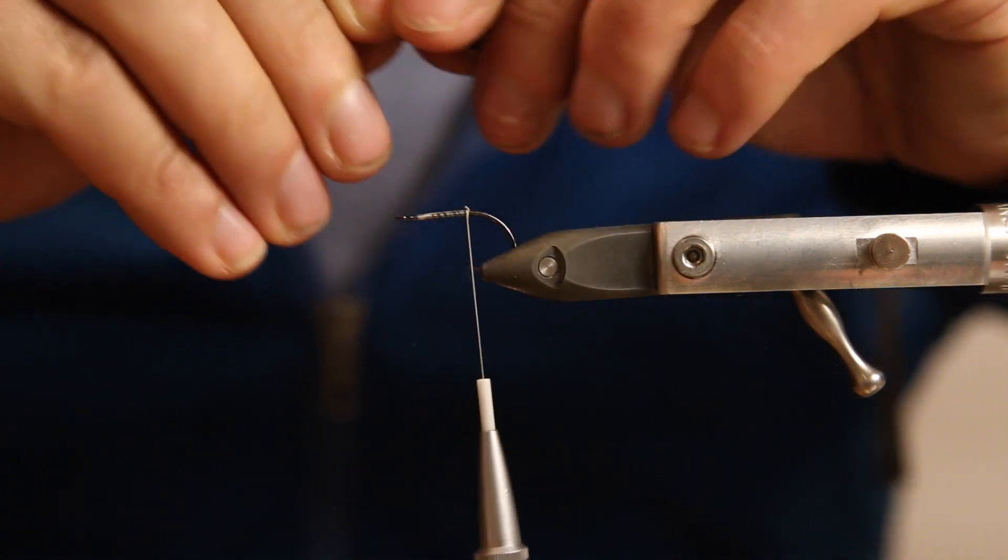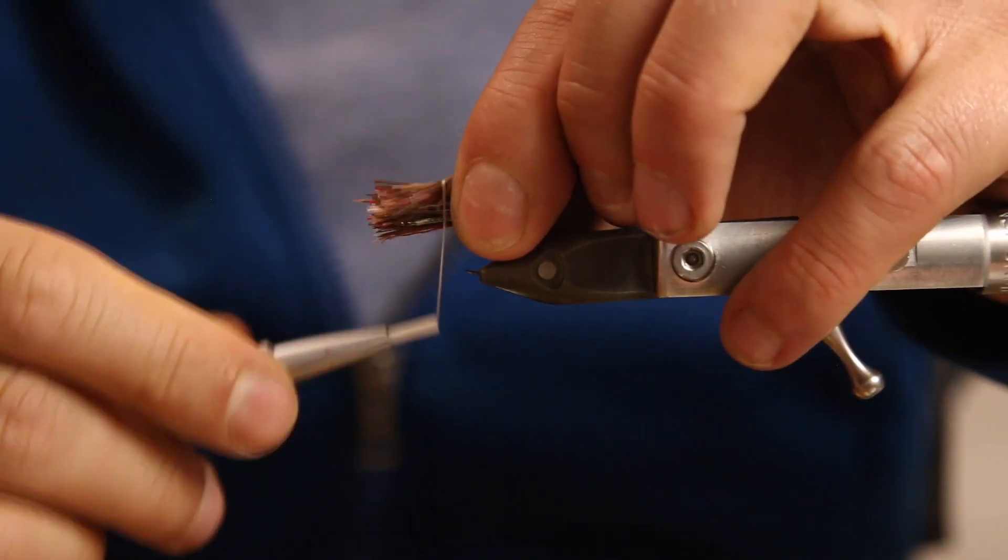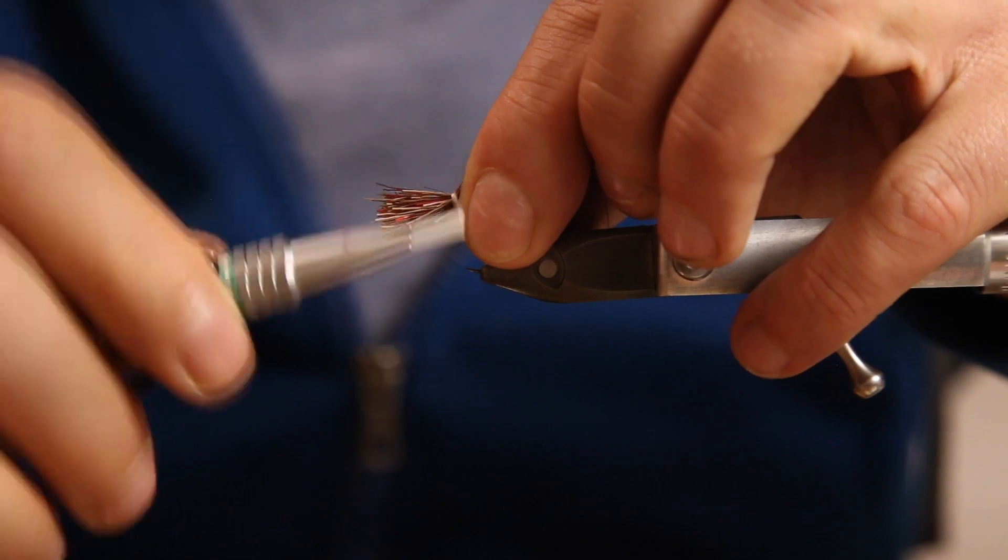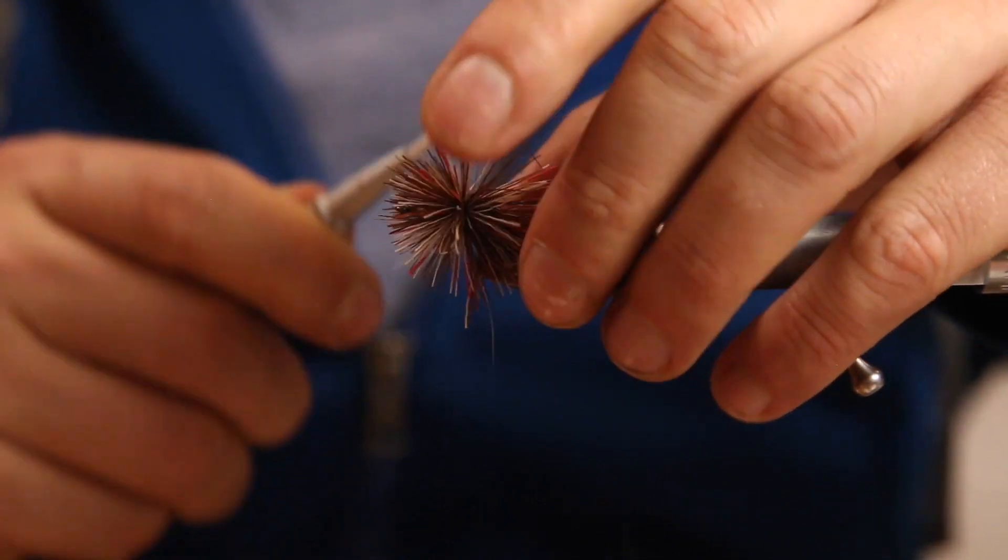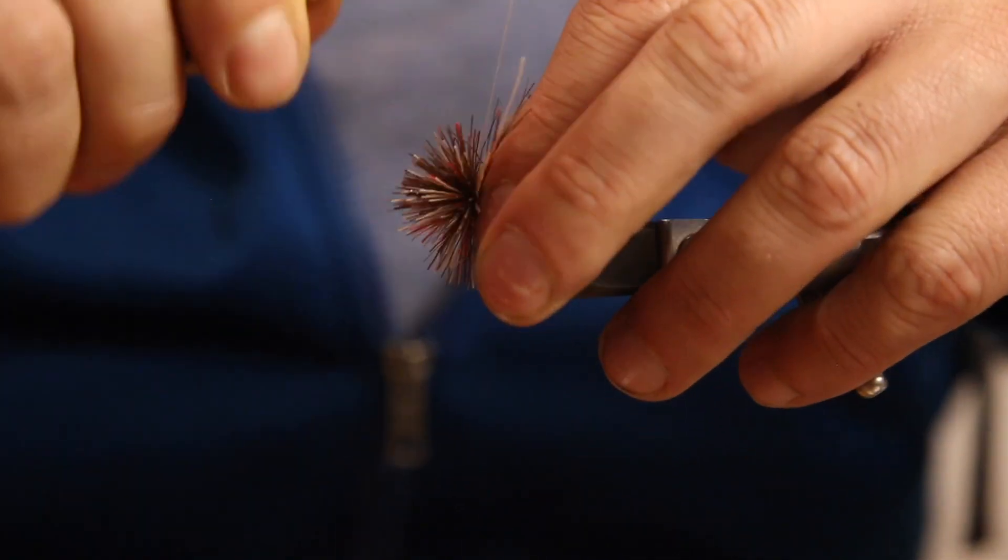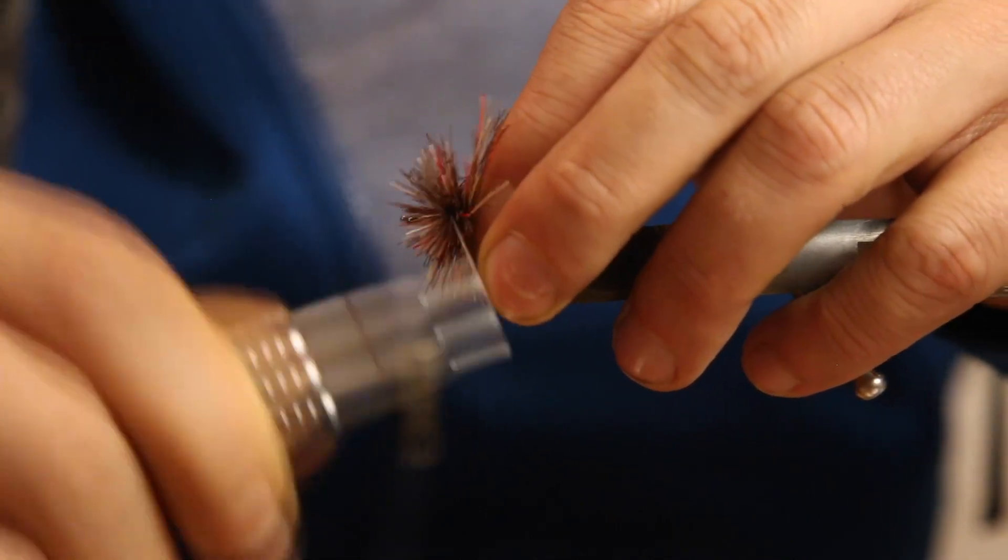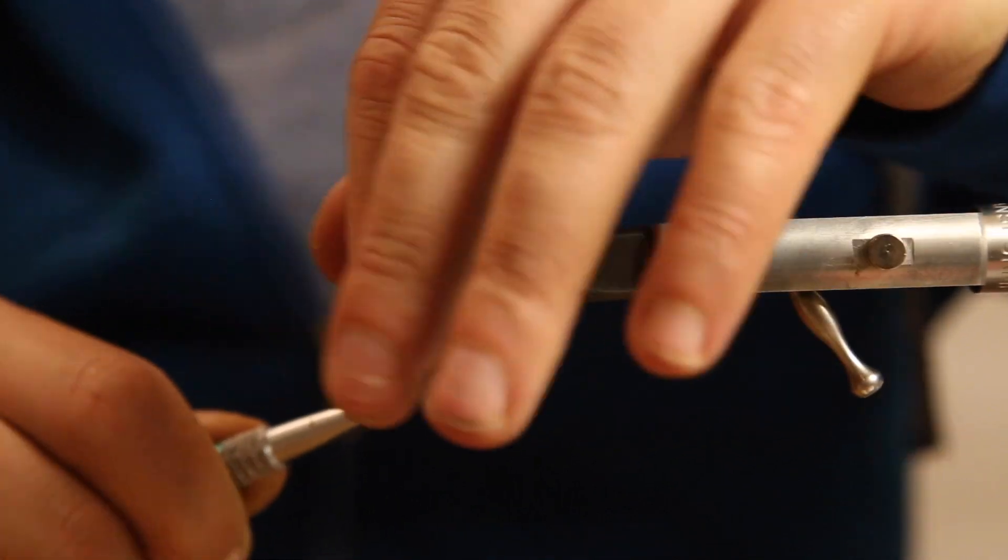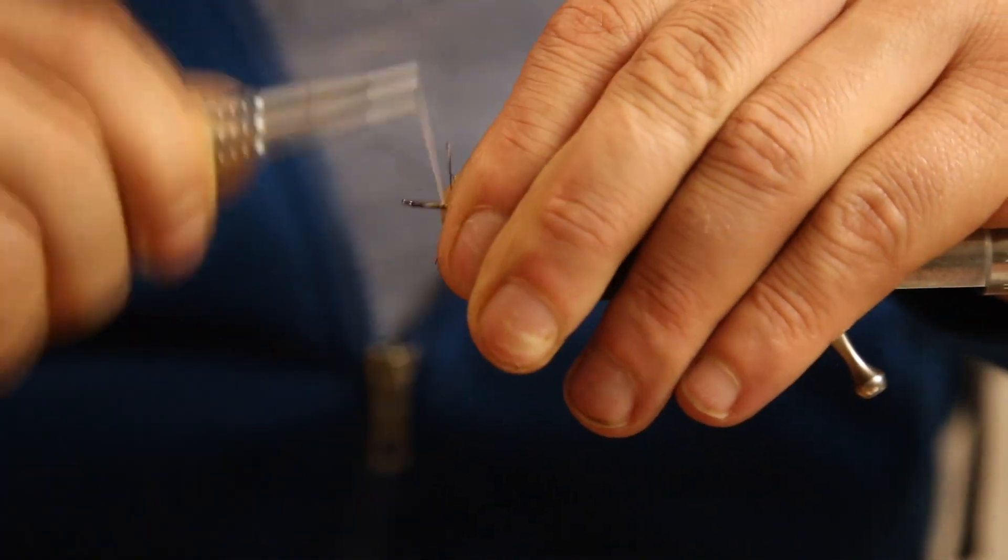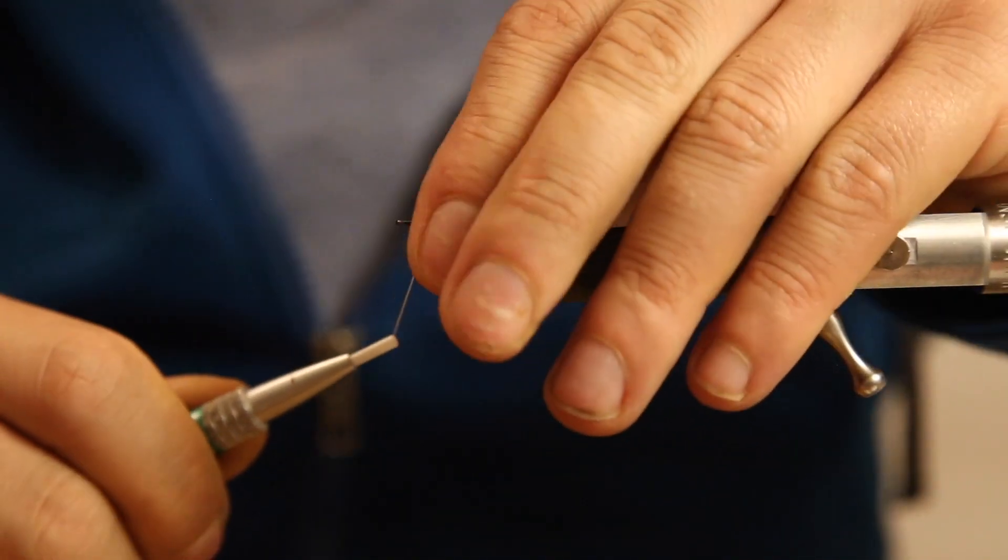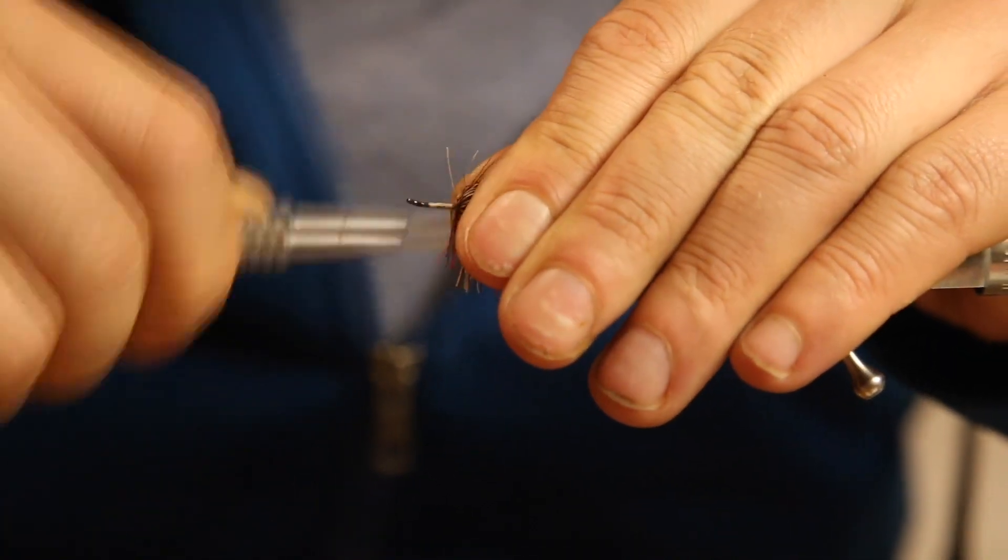Then we can tie it in and spin it. Go around once, twice, three times loose, and then just let it spin on the hook shank. Go with a wiggling movement through the material, secure it with one, two, three wraps in front of it, then go back to the base.